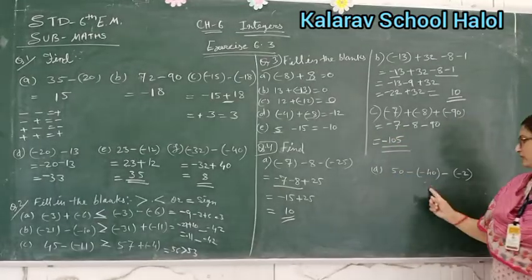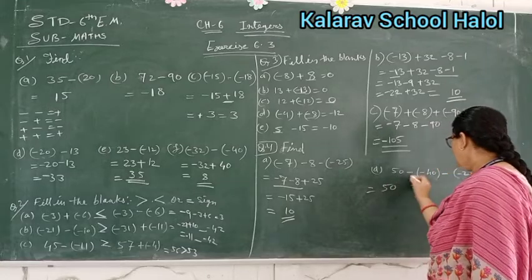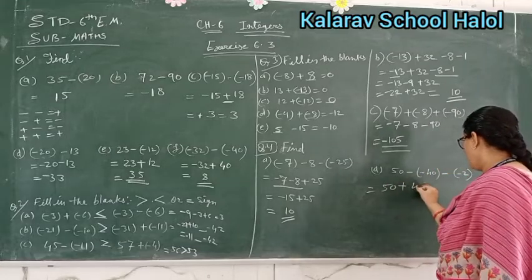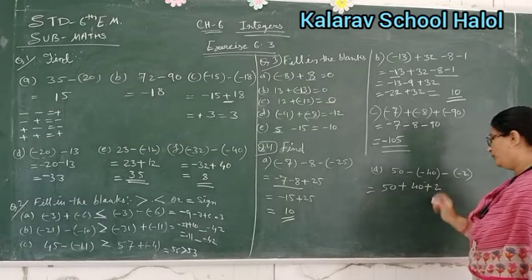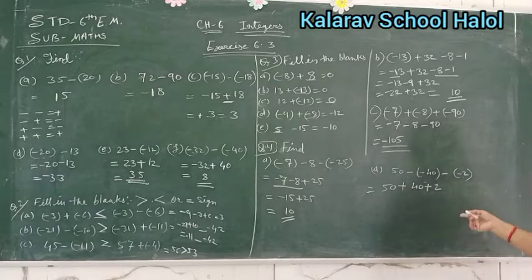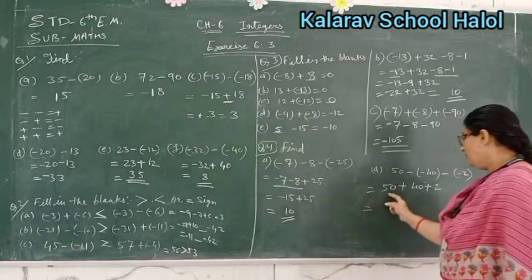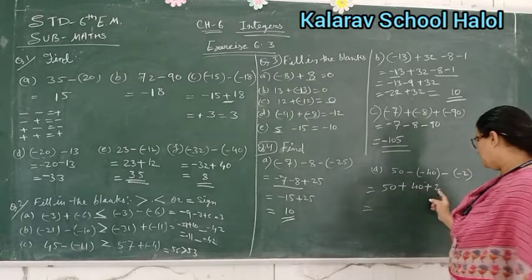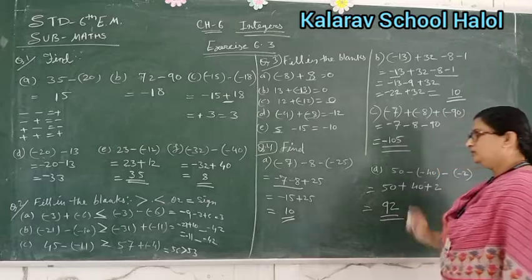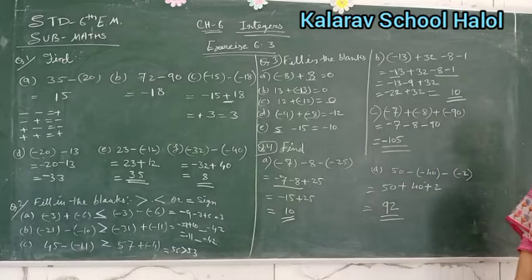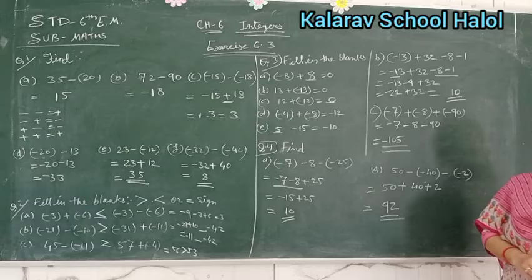Then question number D: 50 minus minus plus 40, and minus minus plus 2 — here all become positive signs. So 50 plus 40 = 90, and 90 plus 2 = 92. Okay, exercise 6 complete — all negative numbers become positive here.